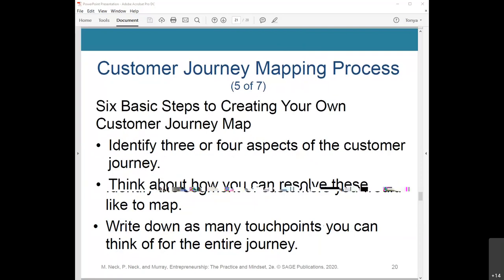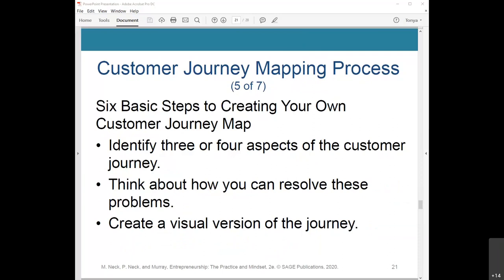There are three aspects of the customer journey to explore: emotional needs, pain points, and obstacles to satisfaction. Think about how you can resolve these problems and improve the customer experience, and post these ideas on the whiteboard. Create a visual version of the journey for you and your team — literally draw the customer going through the process, noting the pain points, emotions, and sources of convenience.